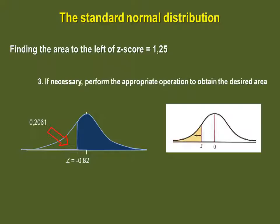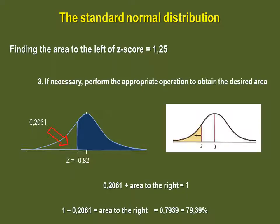Remember also the properties of the normal distribution. The total area under the curve is equal to 1. As such, the area to the left, which is 20.61%, plus the area to the right, is equal to 1. We can rearrange to 1 minus 0.2061 equals the area to the right, which is equal to 0.7939, or 79.39%.